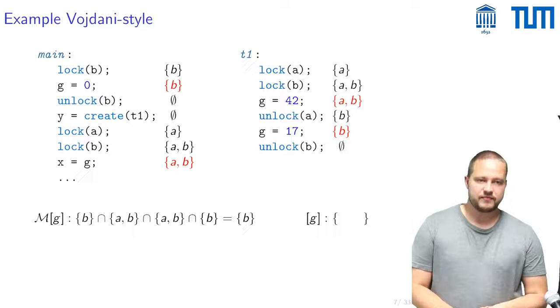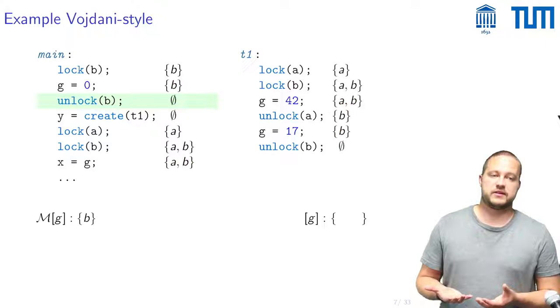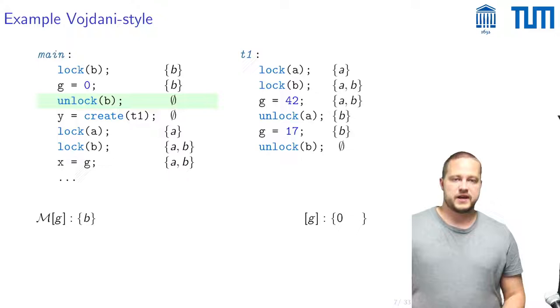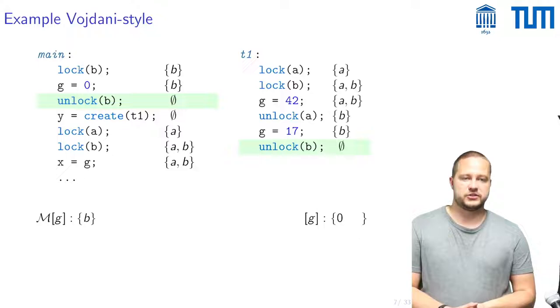And then one looks at the unlocks that happen after a thread has written to a global, for example this one here and here one needs to publish this local value that G might be 0 to this unknown and the same applies for the other unlock B in the other thread and here one will publish this value that G might be 17.